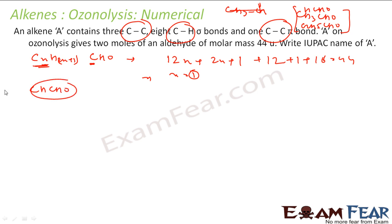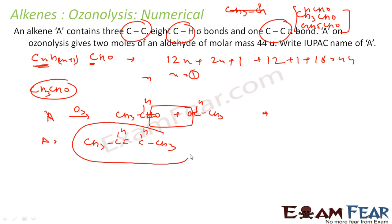So some compound on ozonolysis gives CH3CHO plus the same thing twice. If you want to find the reactant, just join these. A is nothing but CH3CH=CHCH3. This is but-2-ene. Let's verify: A has 3 C-C bonds: 1, 2, 3 sigma bonds, yes. 8 C-H bonds: 3, 4, 5, plus 3, 8 C-H bonds, correct. And 1 C=C double bond, correct. This is correct, that means it is but-2-ene only.